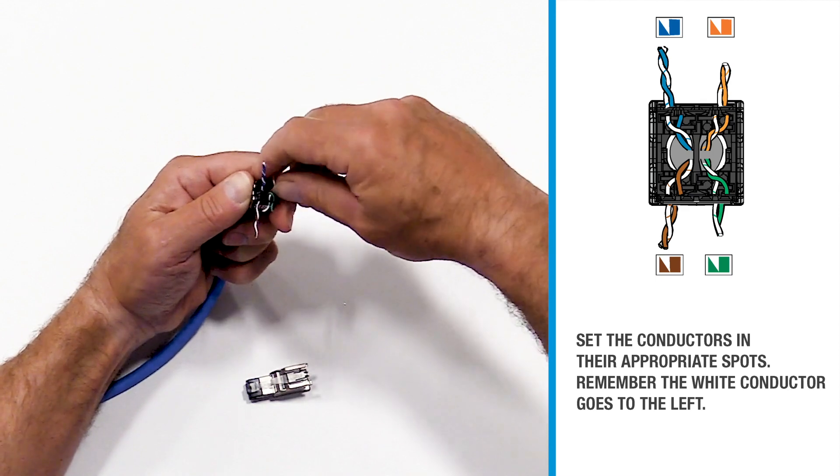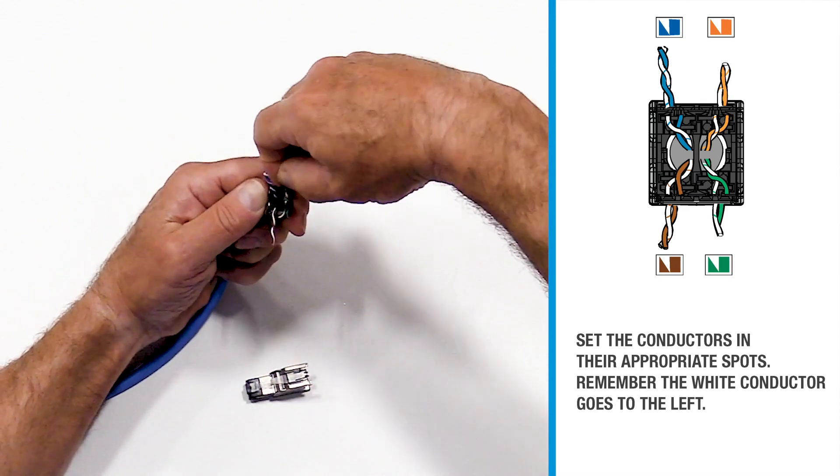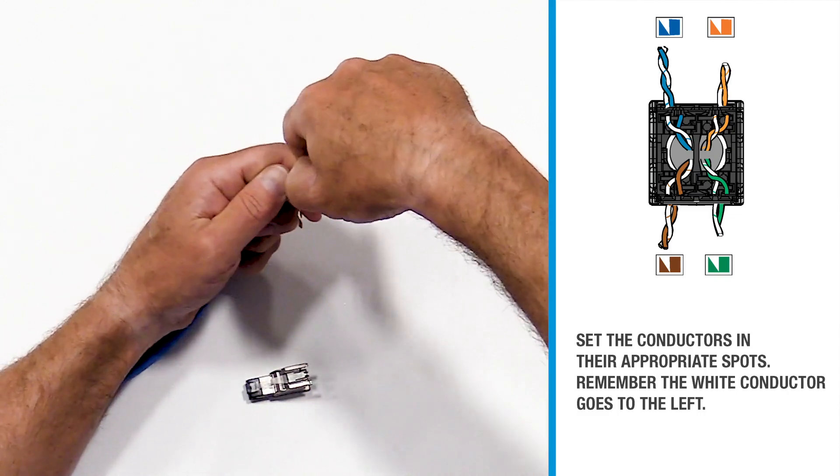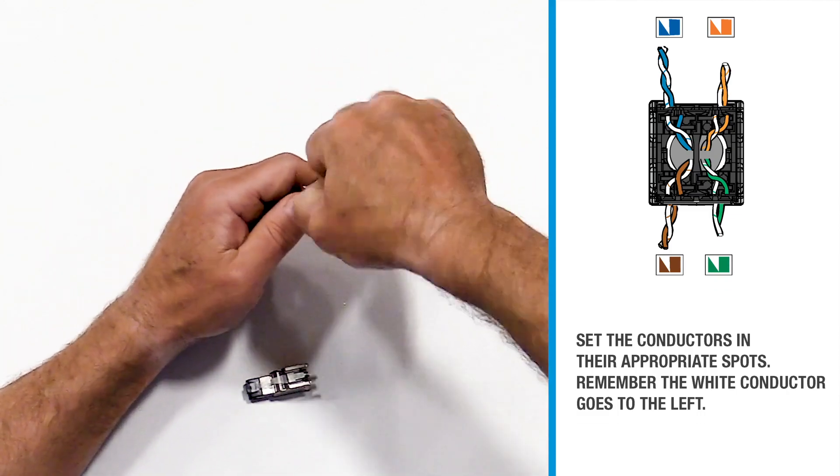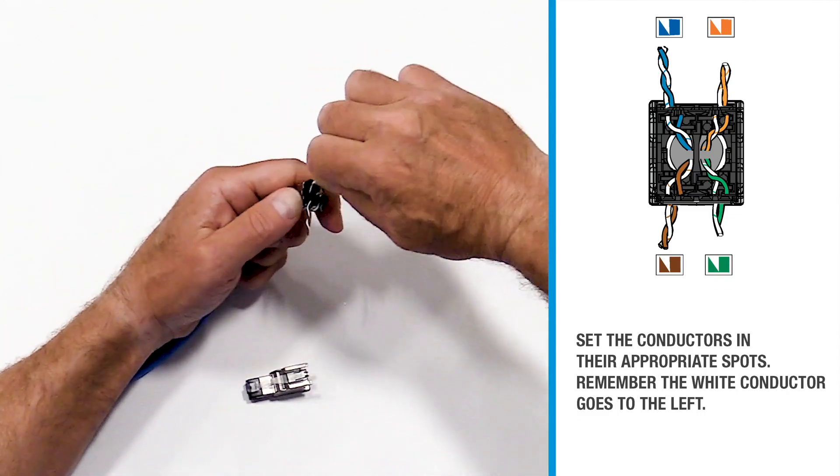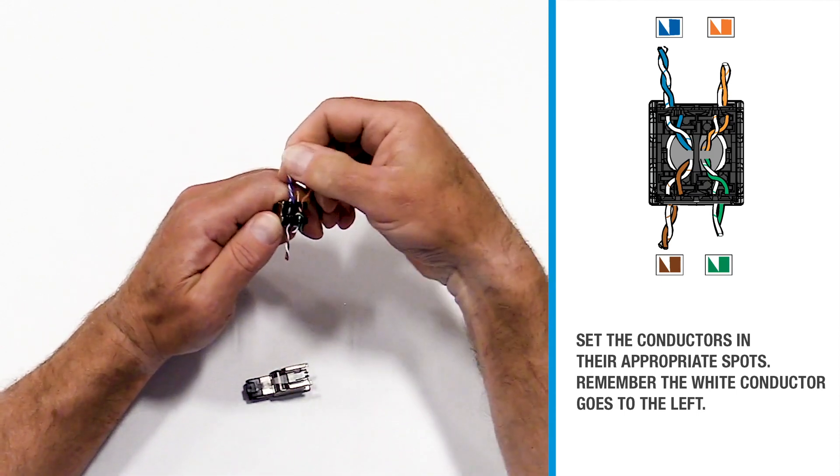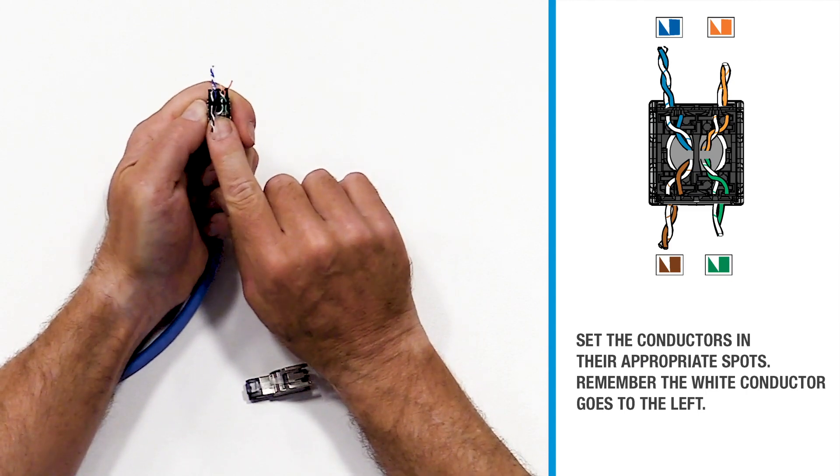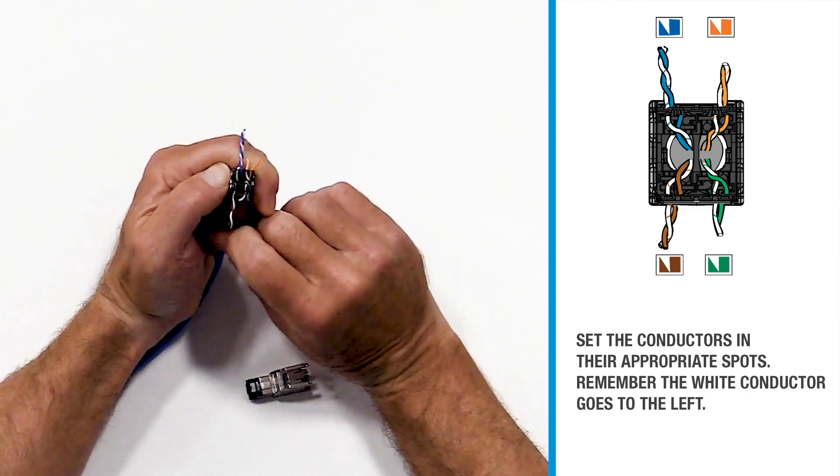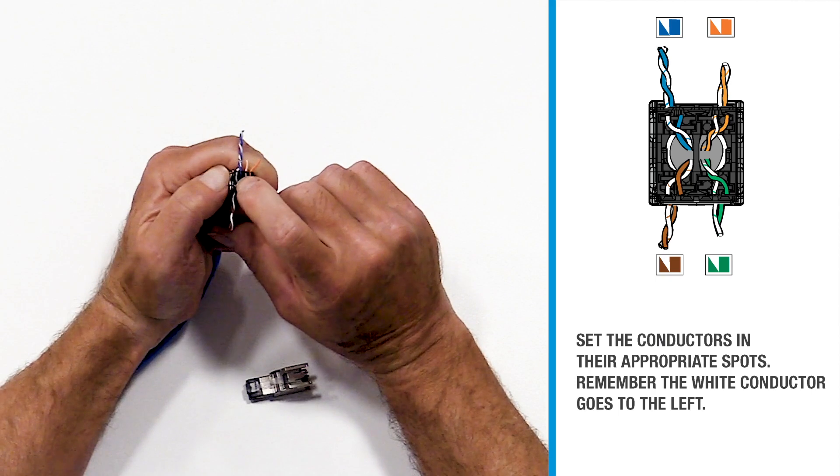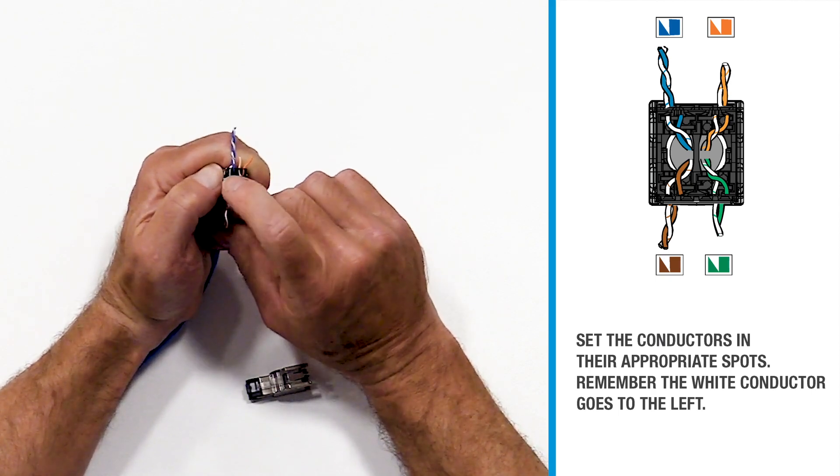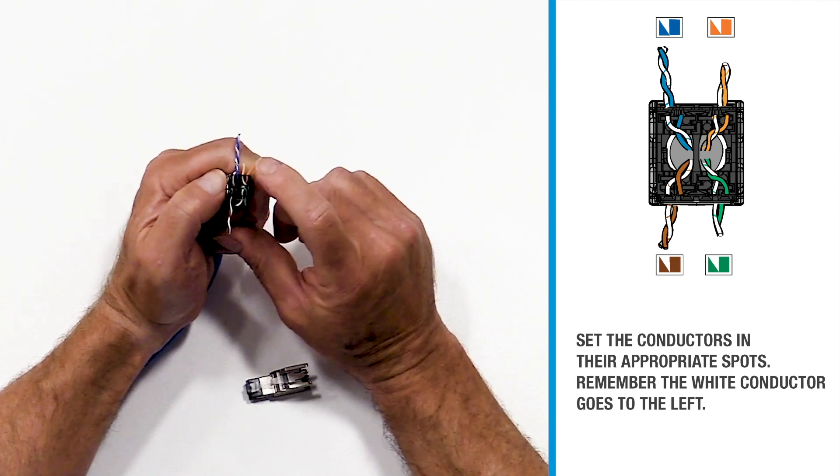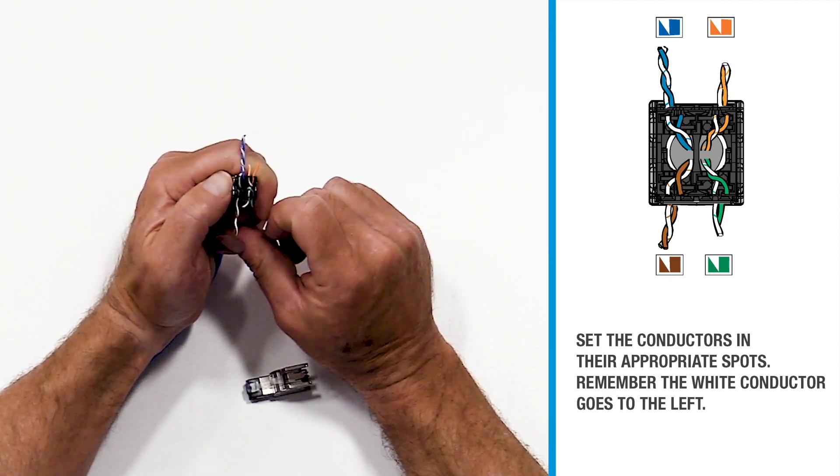We do the same thing in the back. With the color code facing us, the white conductor will go to the left. We'll untwist the blue pair here just enough to slide in our conductors. The white conductor goes to the left, the blue solid goes to the right within its own quadrant. In the orange pair, the white conductor goes to the left, the solid goes to the right.